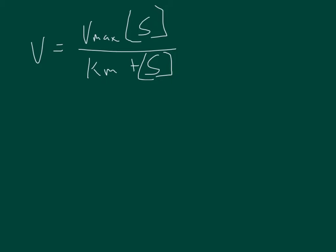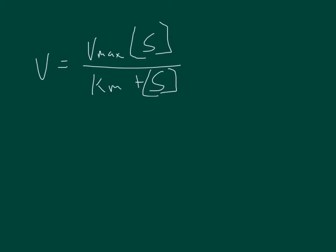We know that a straight line follows the equation Y equals Mx plus B, and so if we can get the Michaelis-Menten equation into that format, then we can have a straight linear line to graph all of the points of the enzyme kinetics. The first thing we're going to do is make it a reciprocal. This is called the Lineweaver-Burk graph, also sometimes called the double reciprocal.